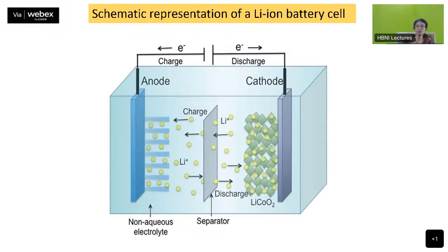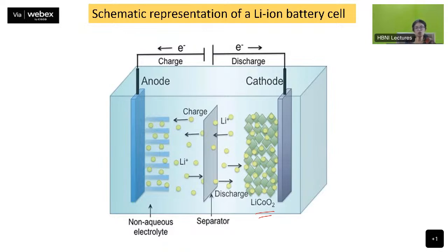In a lithium-ion battery cell, the cathode is lithium cobalt oxide (LiCoO₂) and the anode is graphite. During discharge, lithium stored in the graphite moves back into the cathode. During charging, lithium is pushed from LiCoO₂ into the anode, where it is intercalated between the carbon layers. The electrolyte is generally a carbonate solution with a lithium salt — typically LiPF₆ or LiClO₄. There is also a separator. This is the schematic representation of a lithium-ion battery cell.